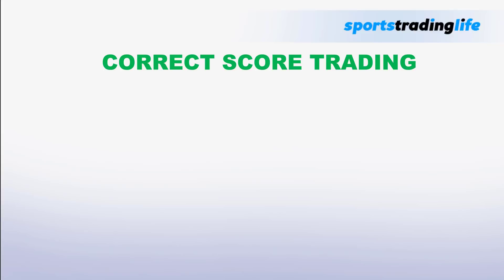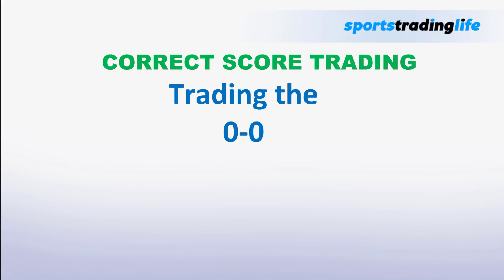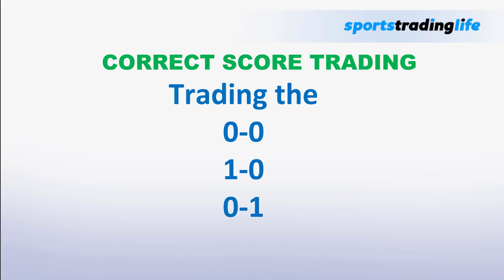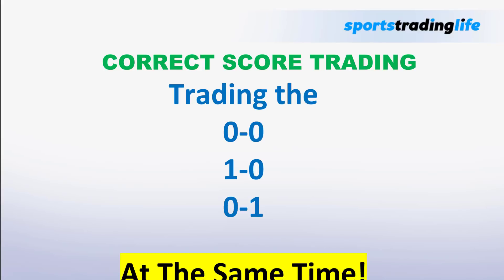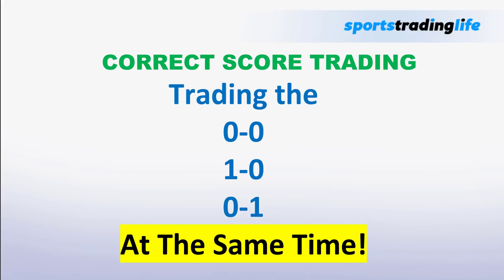We're going to take a look at a Betfair correct score trading strategy in this video, and it is a strategy that involves trading the nil-nil, the one-nil, and the nil-one score lines at the same time. Could this be a profitable strategy for trading the correct score market on Betfair?